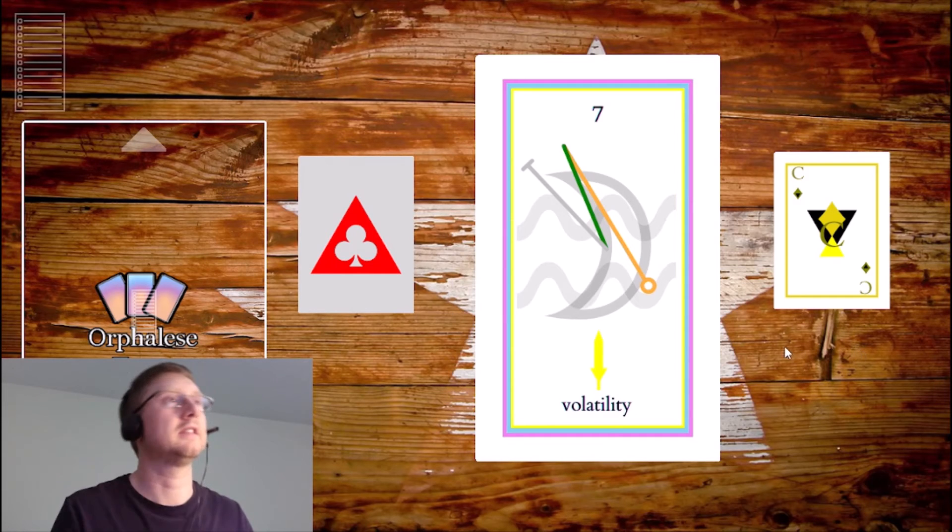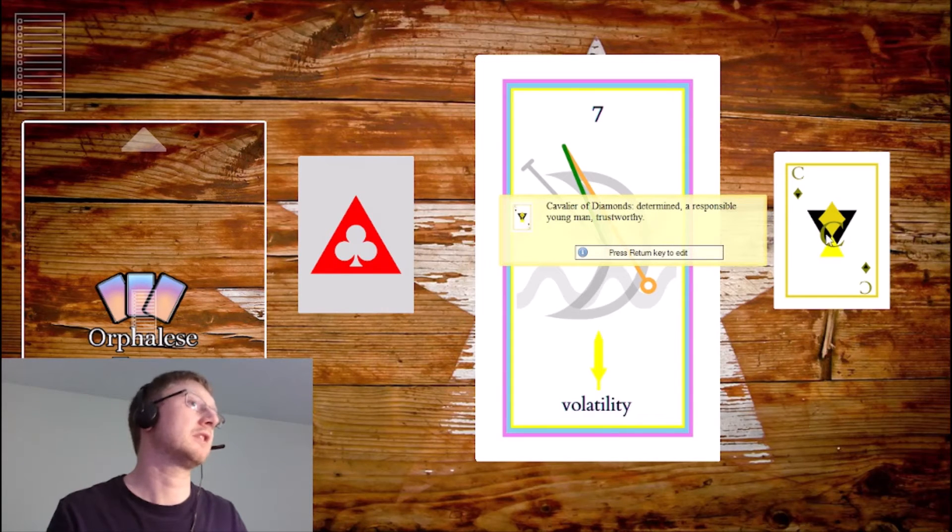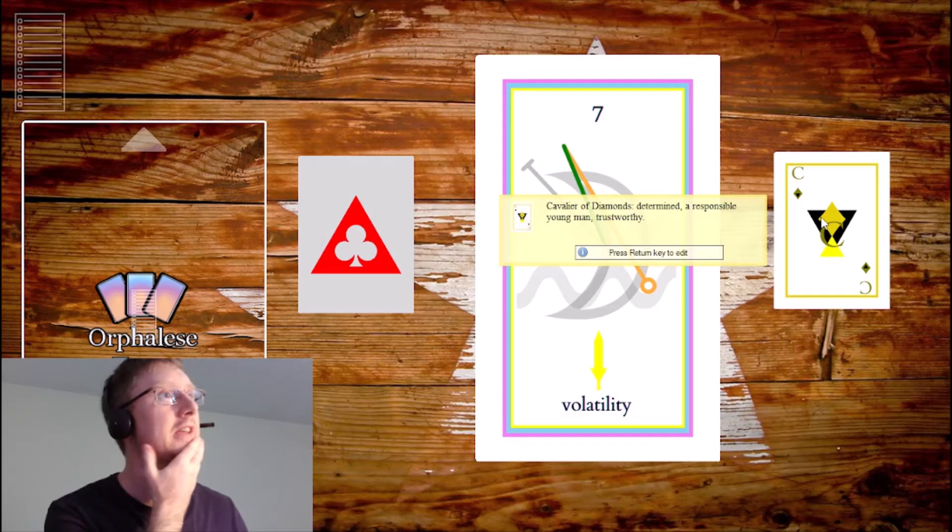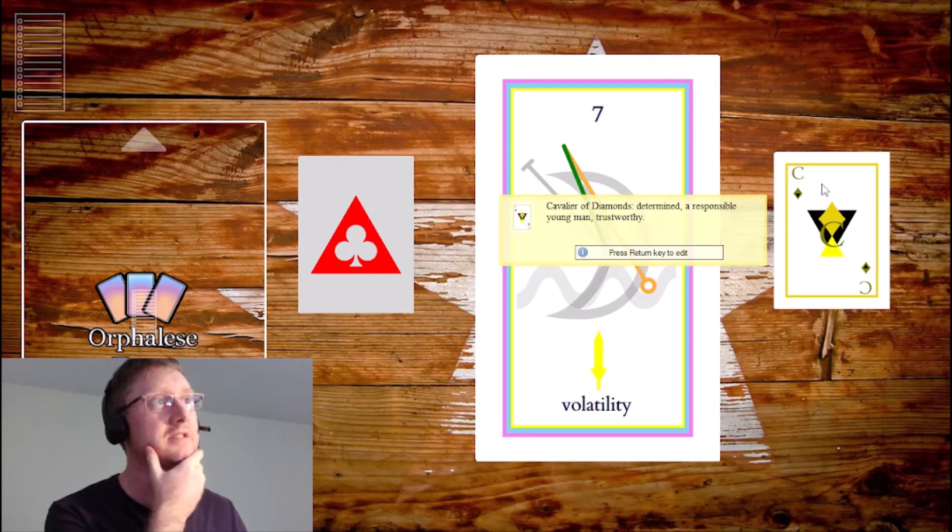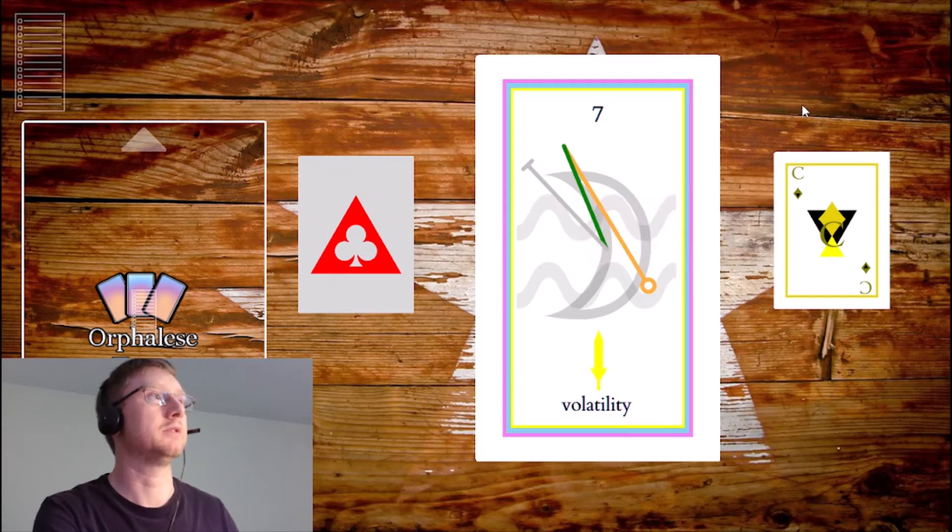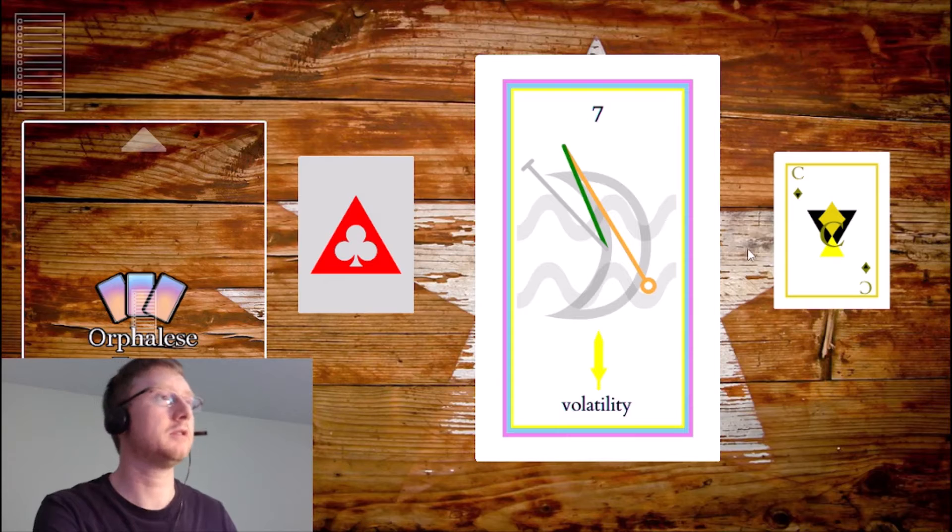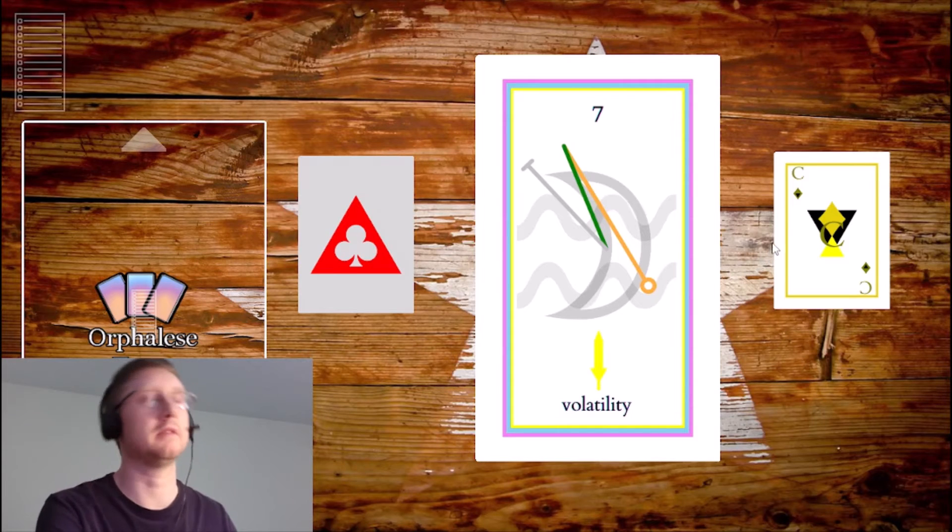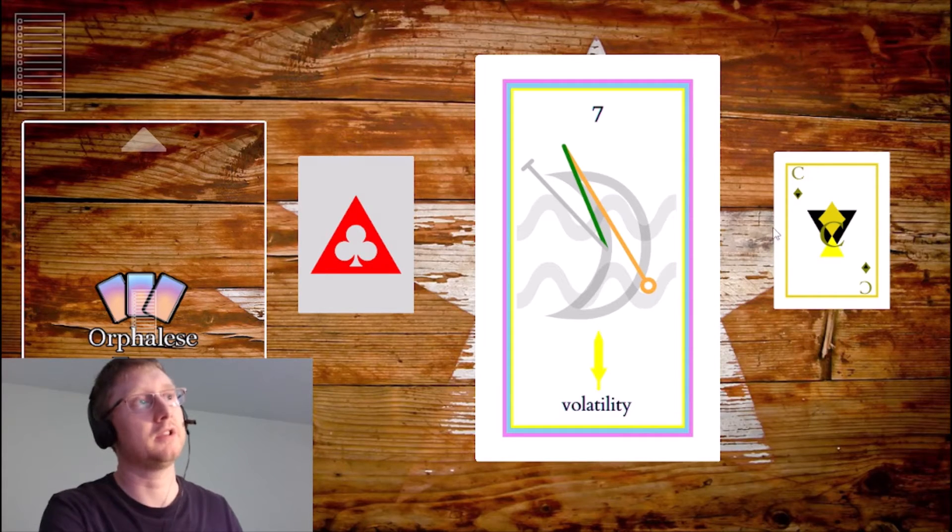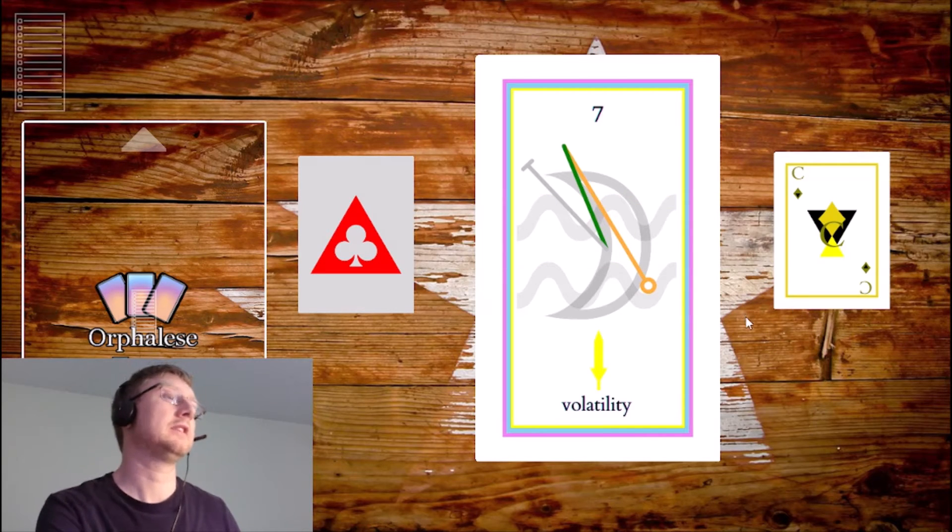So we've got seven of swords, we've got a fire element, but we've got like the cavalier of diamonds, which is like an earth energy. The cavalier of diamonds, there's a responsibility about it, like a young, responsible, determined, trustworthy person. Somewhat of youth, but not necessarily. So maybe of like just beyond youth, but not quite too old. Volatility, seven of swords.